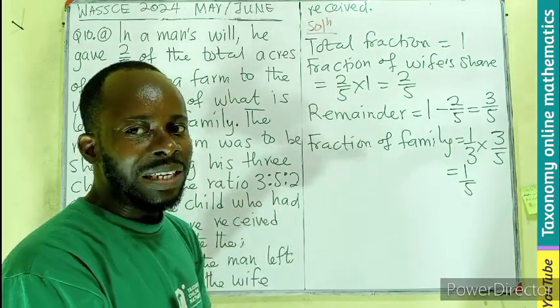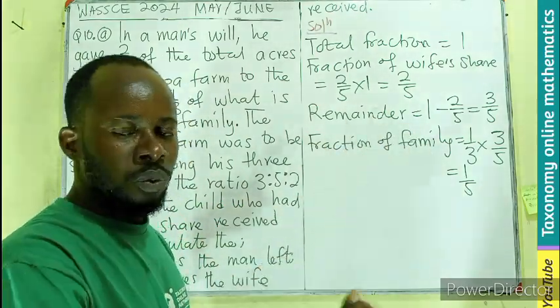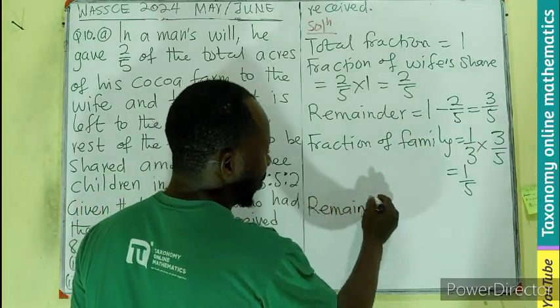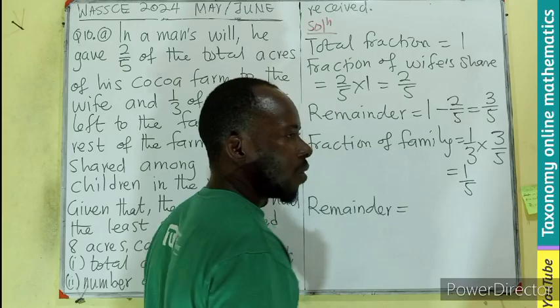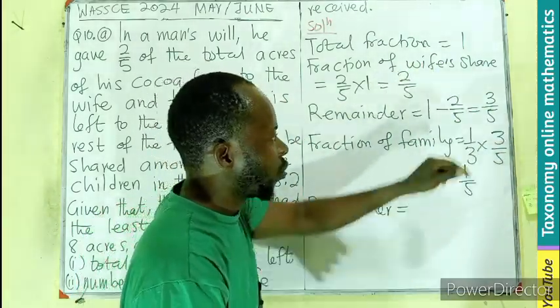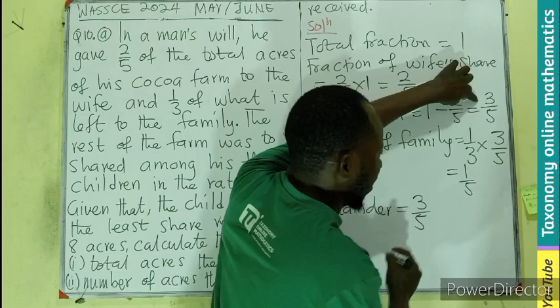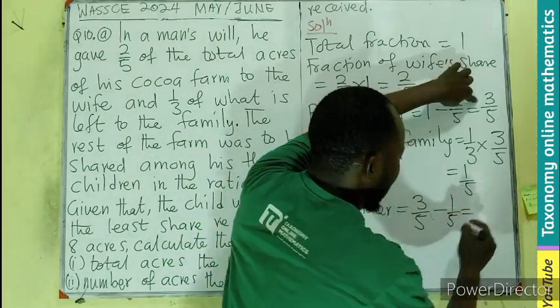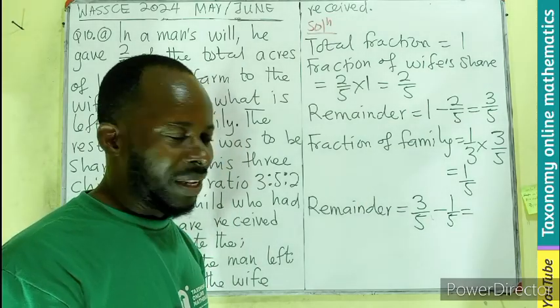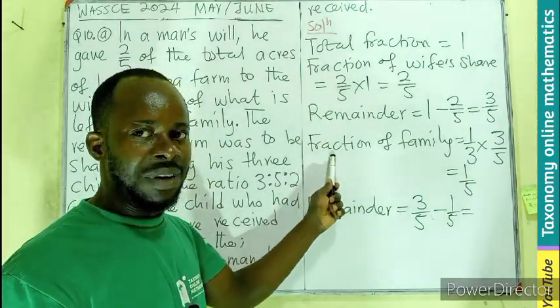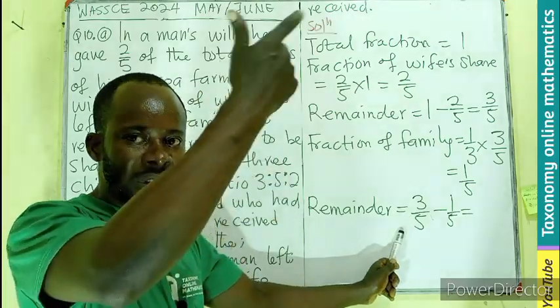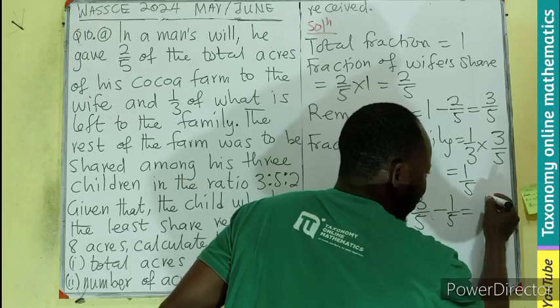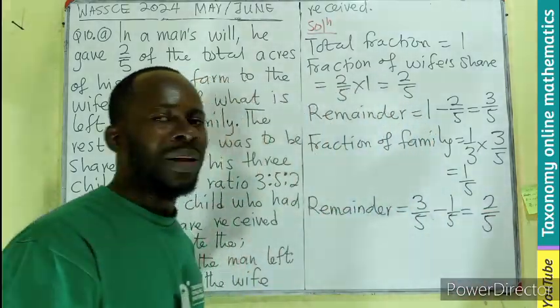Now, after family has been given their share, what do you think is left? We still have something left, right? So we still have the remainder. Still, the remainder is what was there before they gave the family. It was 3 out of 5 that was there before we remove 1 out of 5 from it. If this was what was left, then the family received this. So we take the family away from what was left to find this is the same denominator. So we subtract the numerators to have 2 out of 5.